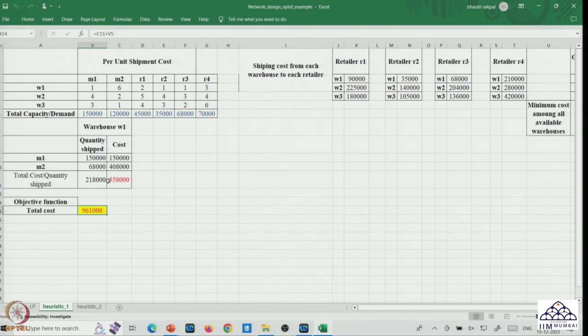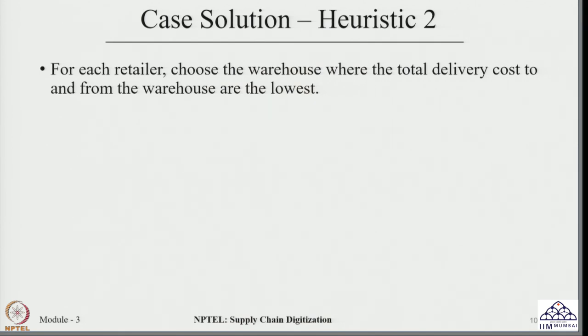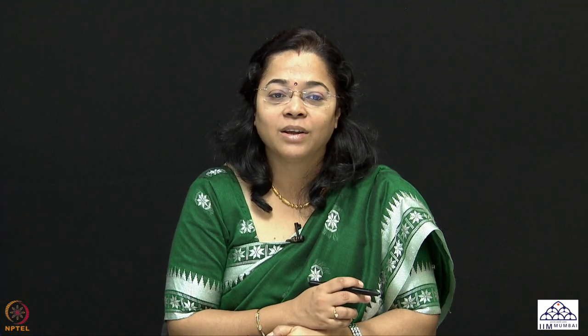We will now solve the same problem using a different heuristic — Heuristic 2. Here, for each retailer, we choose the warehouse where the total delivery cost to and from the warehouse is lowest. This traces the entire journey from manufacturer to warehouse to retailer, finding the right end-to-end combination. The whole path is evaluated to identify the optimal routing.